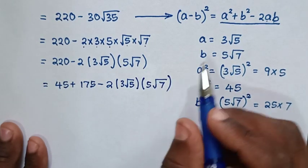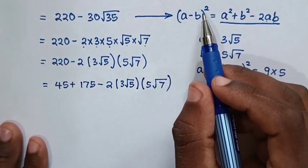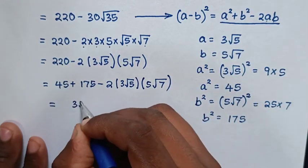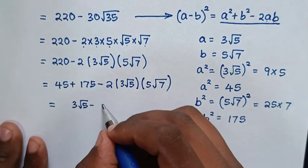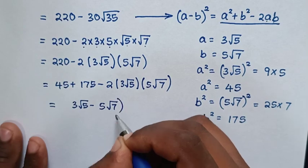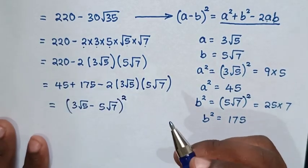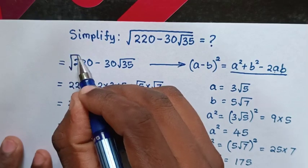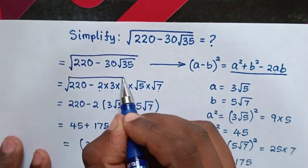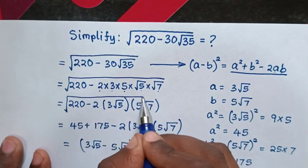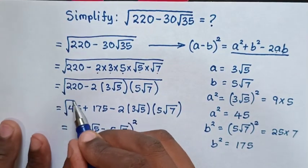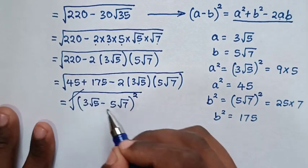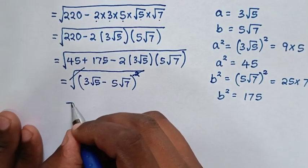Because this equation is in the form of (a minus b) squared, it is obviously equal to that form. So this is equal to (a minus b) squared, which is (3 square root of 5 minus 5 square root of 7) squared. Note that this expression was under the square root, so we apply the square root. The square root cancels with the square, and this will be equal to 3 square root of 5 minus 5 square root of 7.